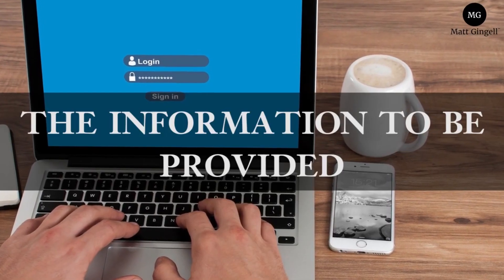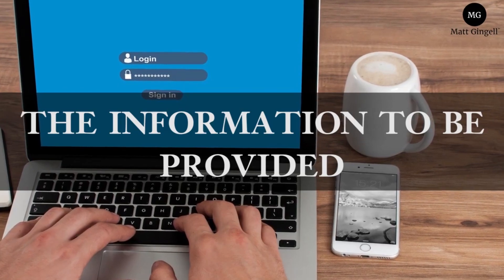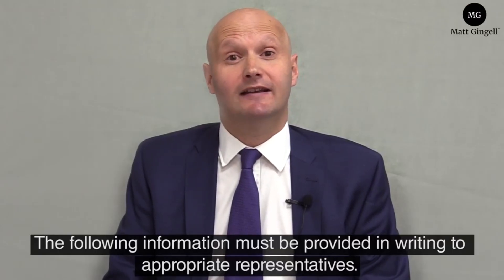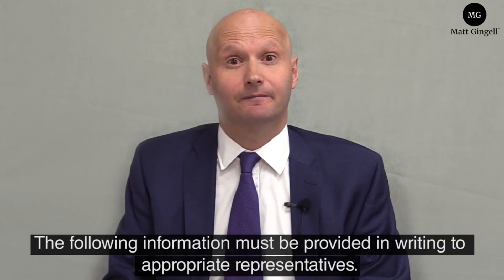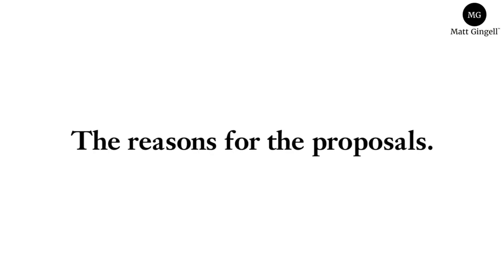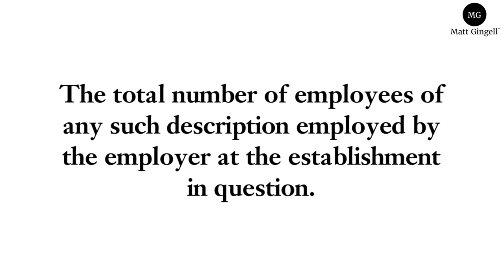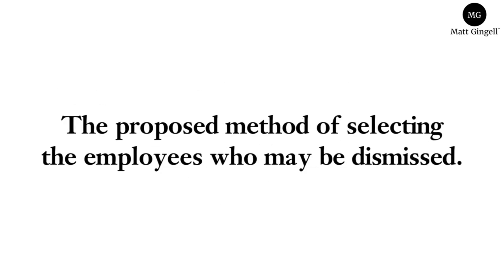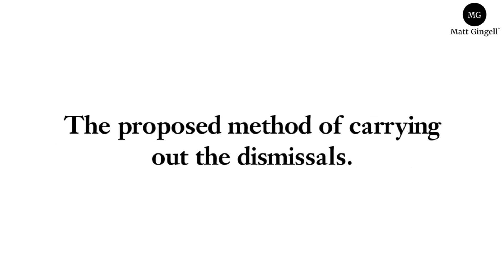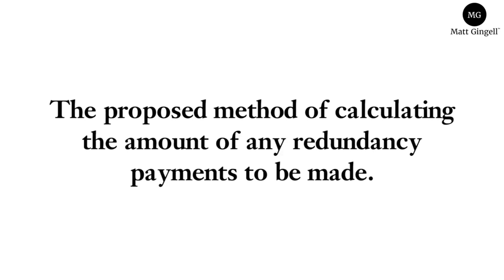The information to be provided. The following information must be provided in writing to appropriate representatives: the reasons for the proposals; the numbers and description of employees whom it is proposed to dismiss as redundant; the total number of employees of any such description employed by the employer at the establishment in question; the proposed method of selecting the employees who may be dismissed; the proposed method of carrying out the dismissals; and the proposed method of calculating the amount of any redundancy payments to be made.